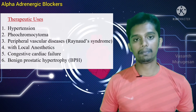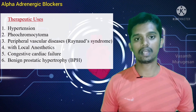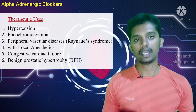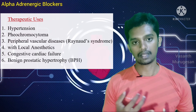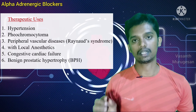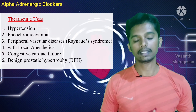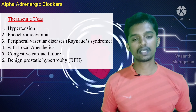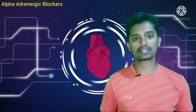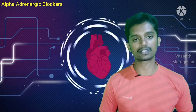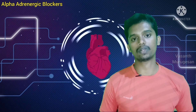The fifth use is BPH — Benign Prostatic Hypertrophy. Alpha blockers act in the bladder and prostate to decrease resistance to urine flow, providing relief in this disease. These are the therapeutic uses of alpha adrenergic blockers, or alpha adrenergic antagonists.